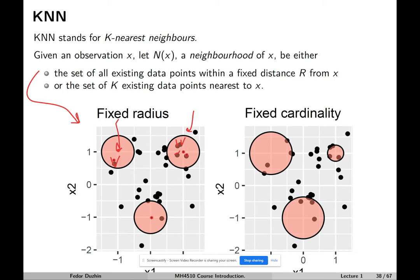Another possible way — and the more popular one — is as follows: we look at all possible data points, sort them by distance to x, and take the k nearest. This is why the method is called k nearest neighbors. In areas where data is sparse, the radius of the neighborhood is going to be bigger. In this example, k is 4, so we take the 4 nearest points for each query location.